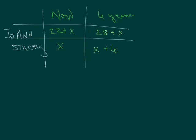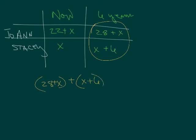So what does it say? In 6 years, the sum of their ages. If we were to add all those up, the sum of their ages. So if I took Joann's age in 6 years and I added Stacy's age in 6 years, the sum of those ages would be 42.